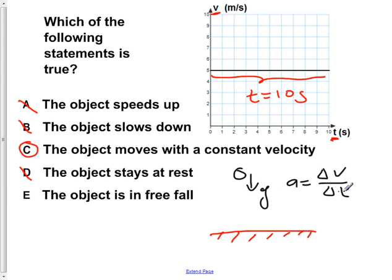So this cannot correspond to this graph. Because here, our velocity is constant. If our velocity was constant in this instant, that would dictate that our acceleration would be equal to 0. But we know that if you are in free fall, that your acceleration cannot be 0. So that is why choice E is wrong.